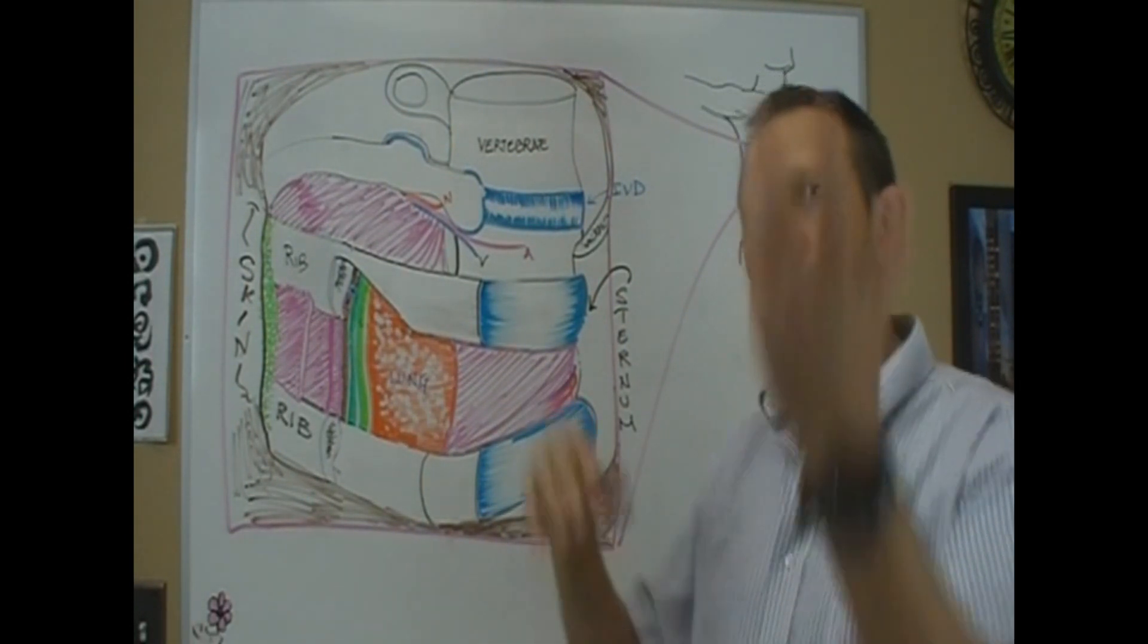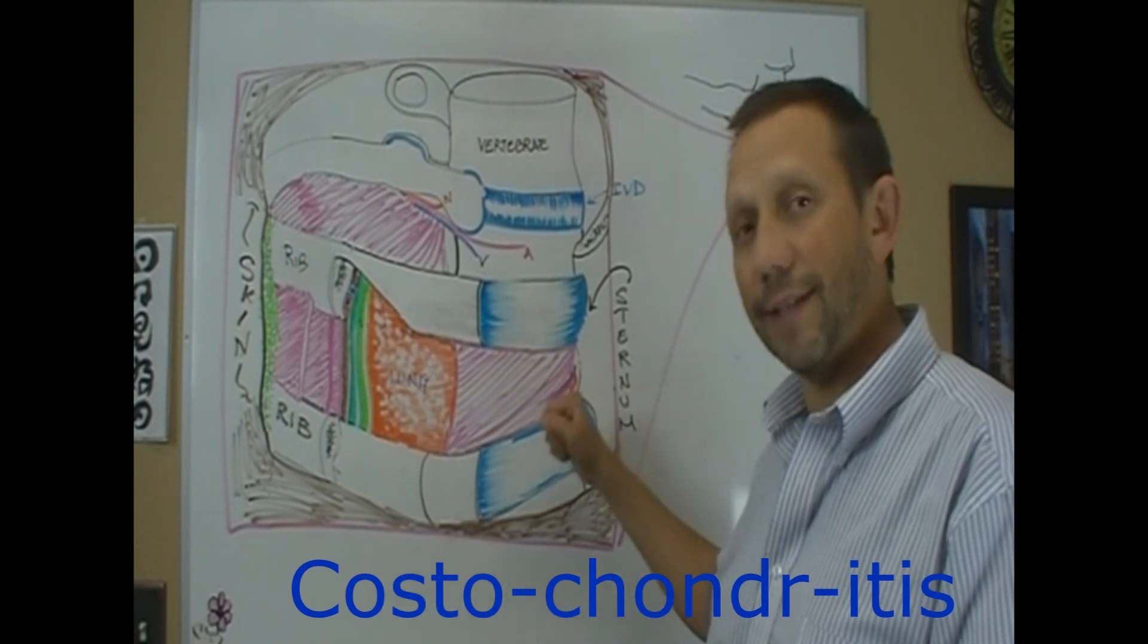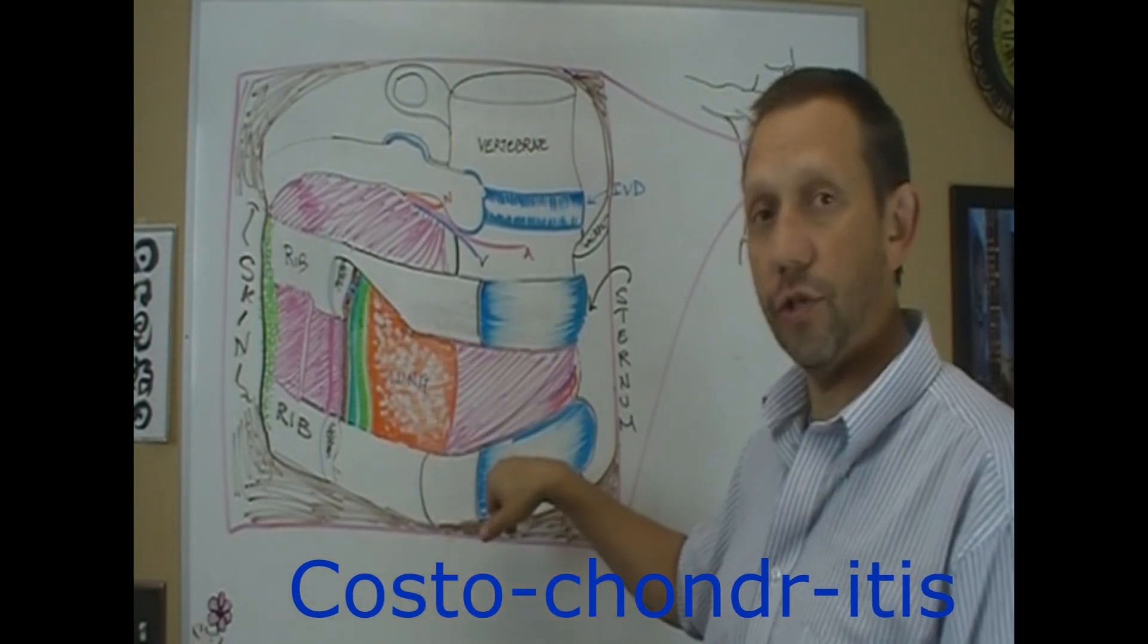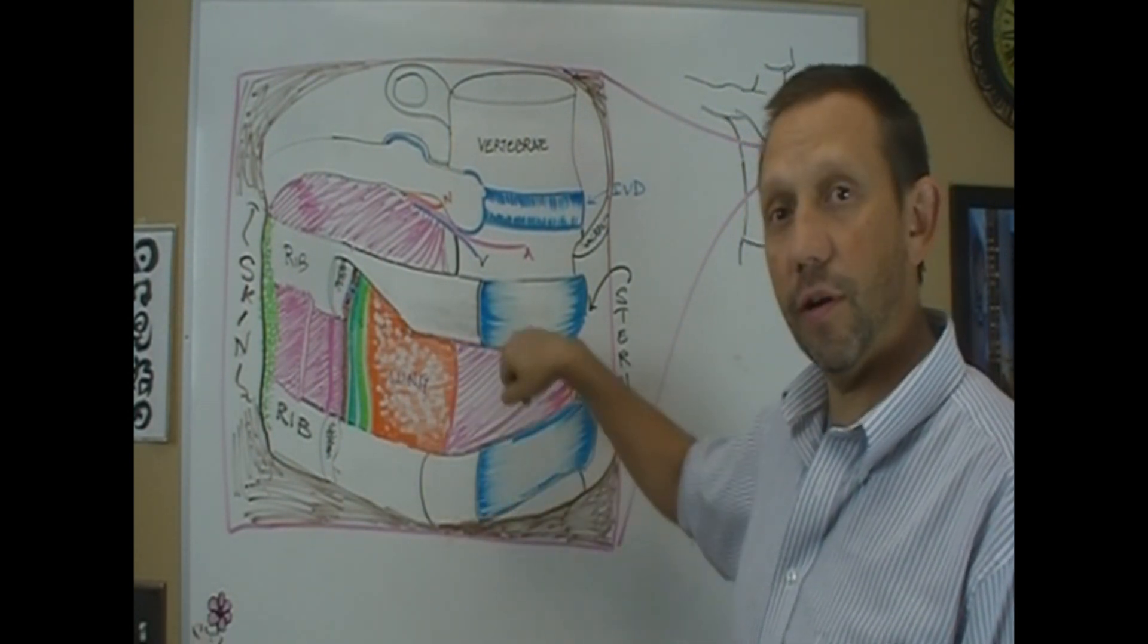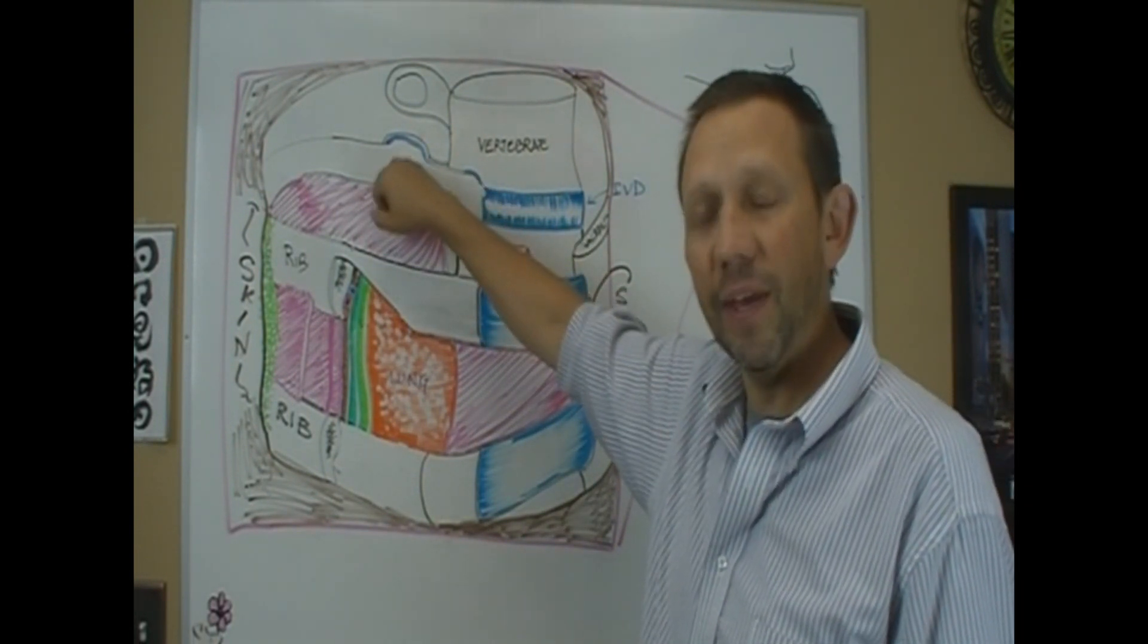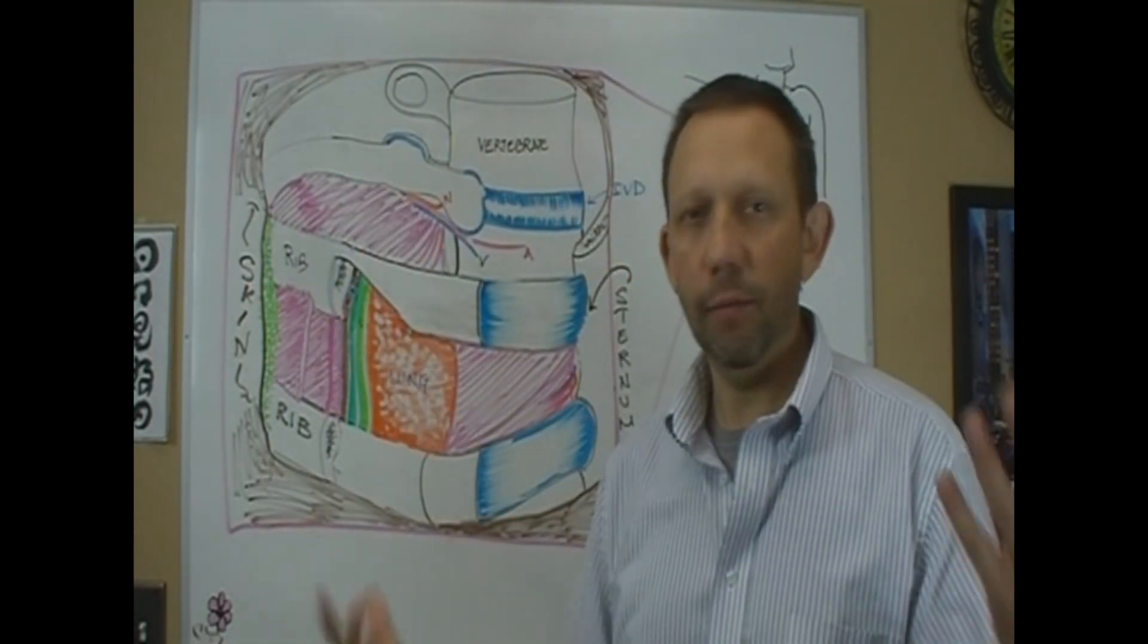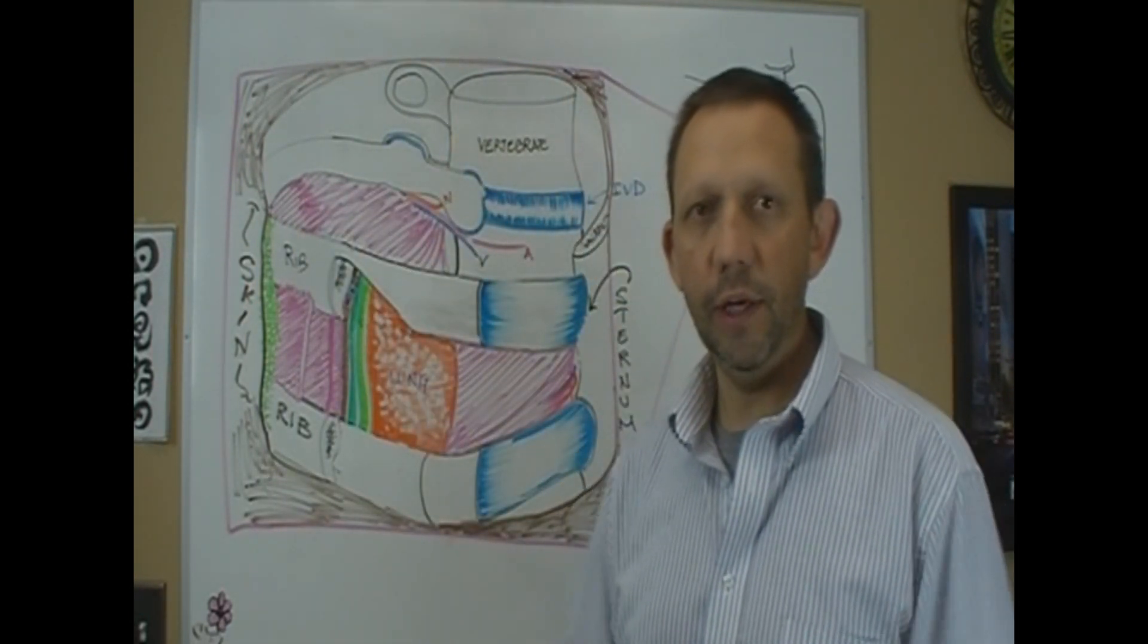Whenever you have costochondritis, costo meaning rib, chondritis, cond meaning cartilage, we could be talking about this section here, we could be talking about up and through here, we could be talking about up in here. Now this section up in the back, in the top, really that's the chiropractic subluxation complex, that's really what it is.